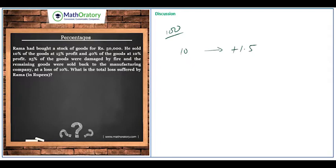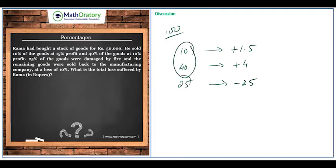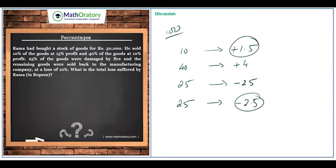If the total goods are worth 100 rupees: 10 percent of goods is worth 10 rupees generating 15 percent profit, giving a 1.5 rupee profit. The 40 percent of goods is 40 rupees generating 10 percent profit, giving a 4 rupee profit. The 25 percent damaged goods means a 25 rupee loss. The remaining 25 percent sold at 10 percent loss gives a 2.5 rupee loss.